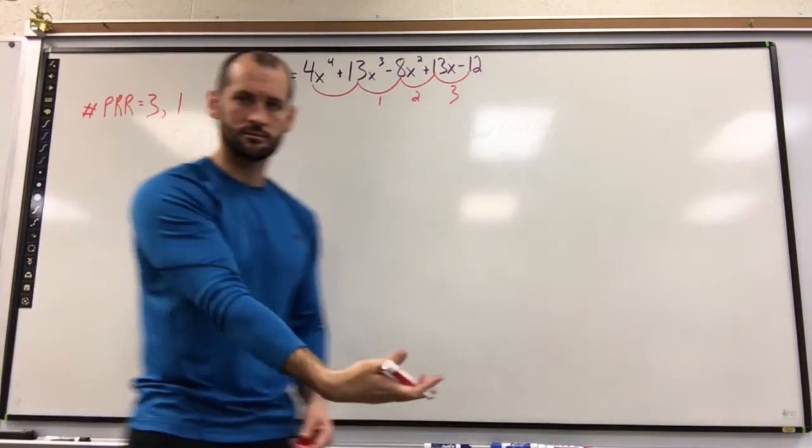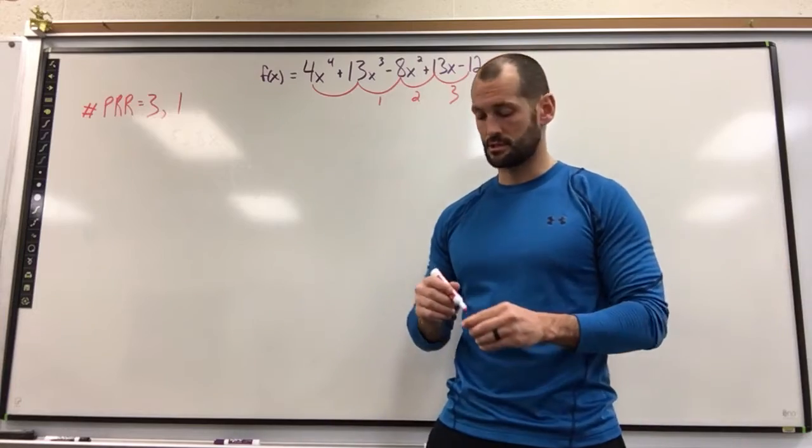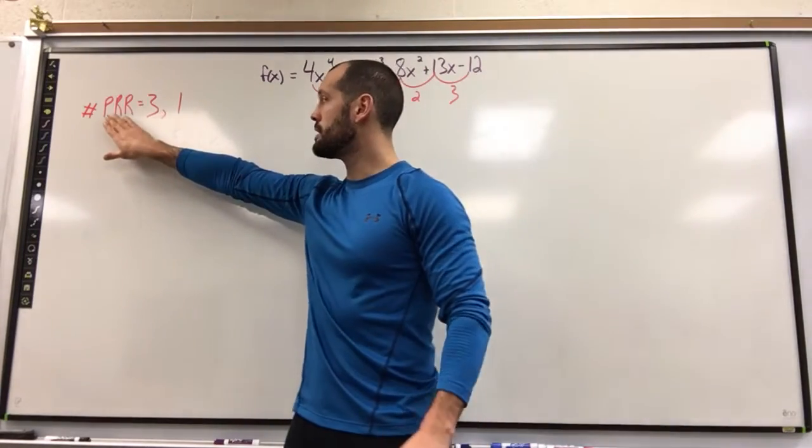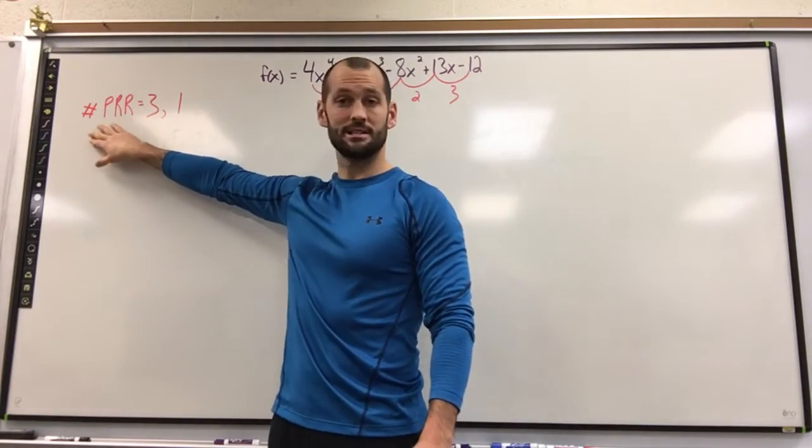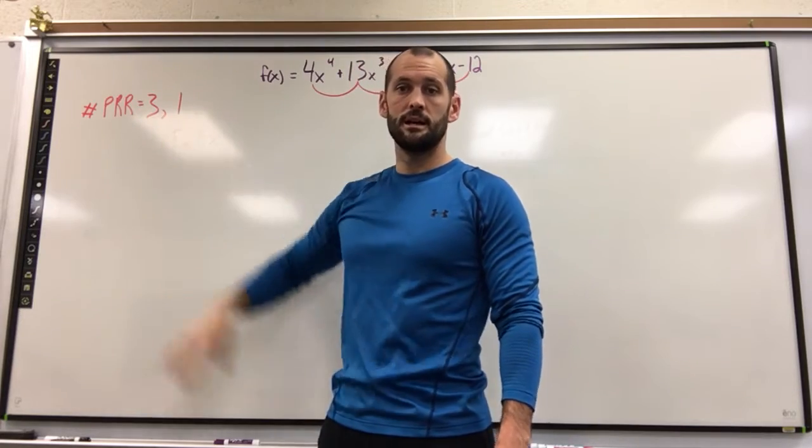What that means is if there's three, there could also be one. It can't go to negative, right? We're not going to have a negative amount of solutions. So that's how we get our positive real roots. That's our potential. We could have three or we could have one.